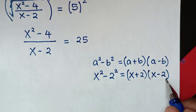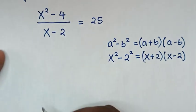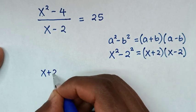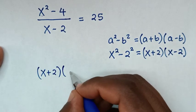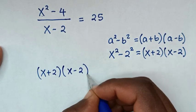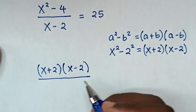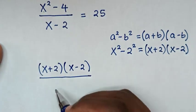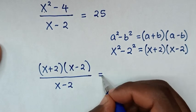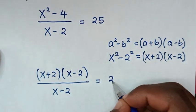So we will substitute this into here. Then our equation will be x plus 2 bracket x minus 2 bracket over this denominator which is x minus 2 is equal to 25.